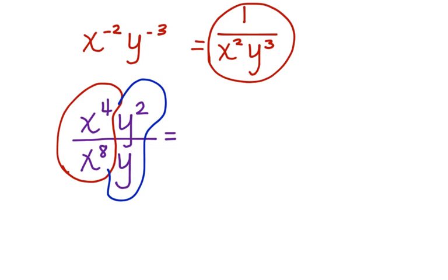x to the 4th divided by x to the 8th would be x to the 4th minus 8, which would be x to the negative 4th, which would be equal to 1 over x to the 4th.